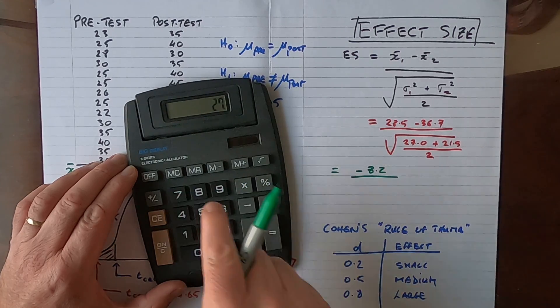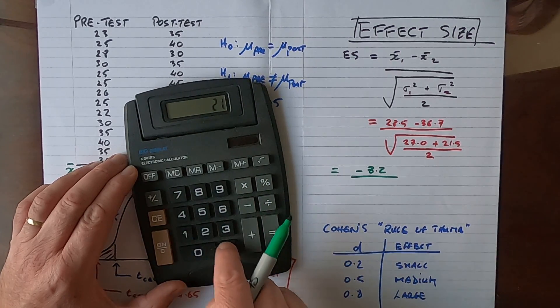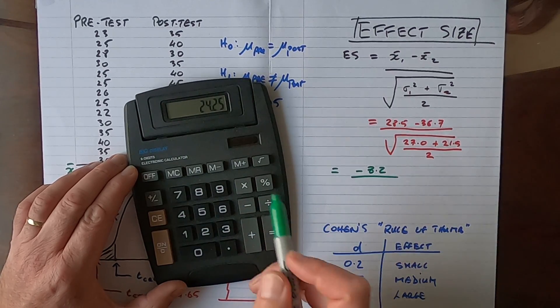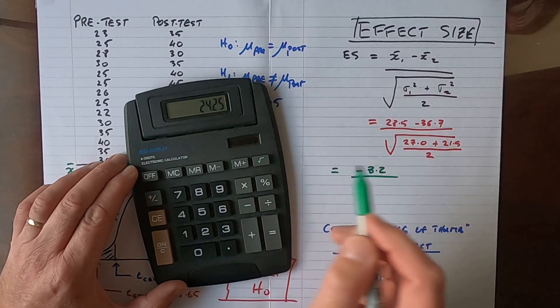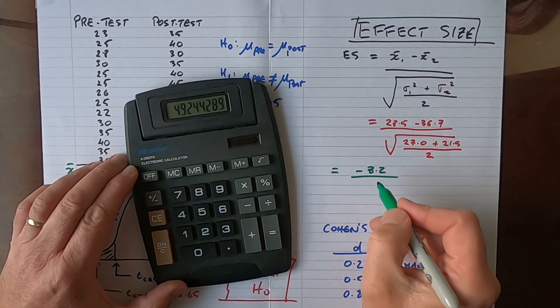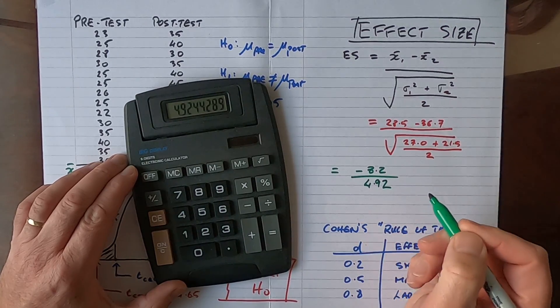That's equal to 24.25. And while I have that on my calculator, I'm going to hit the square root button, and that gives me a value of 4.92.